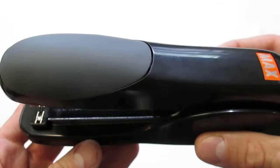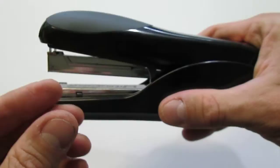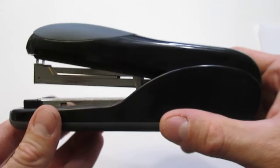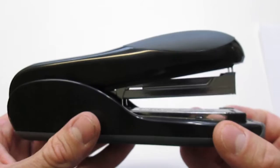It has flat clinch technology which actually clinches the staple completely flat on the back side of your paperwork, which prevents snagging on clothing and snagging on other paperwork.